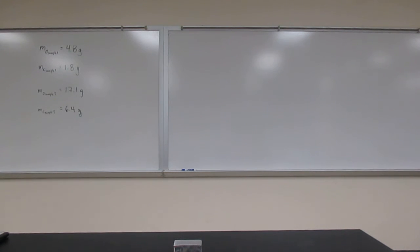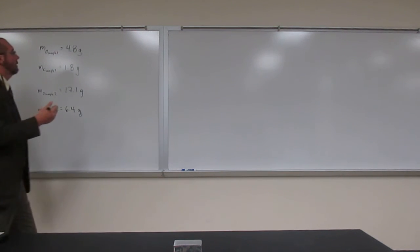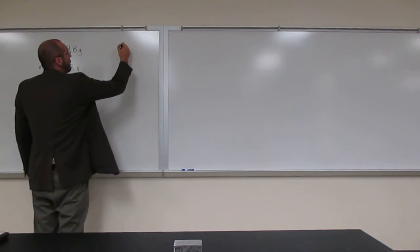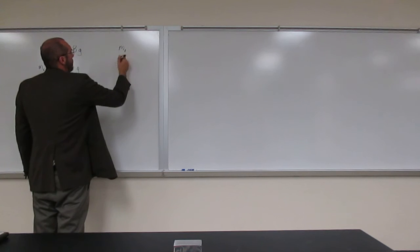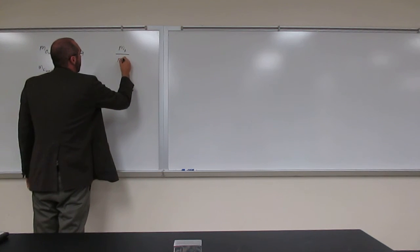I've written down the masses of oxygen and carbon from sample 1 and sample 2 respectively. What we're going to do is use the law of constant composition. We take the mass of element A in sample 1 divided by the mass of element B in sample 1.